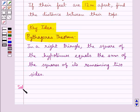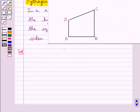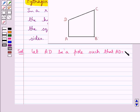Let's move on to the solution now. Let AD be a pole such that AD is equal to 15 meters. So this pole AD is of length 15 meters.